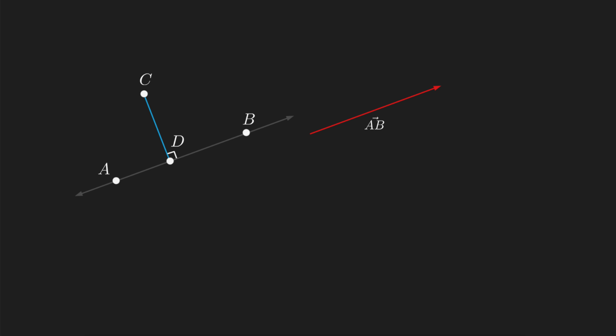So on the x-axis, this is Bx minus Ax, and on the y-axis, it's By minus Ay.